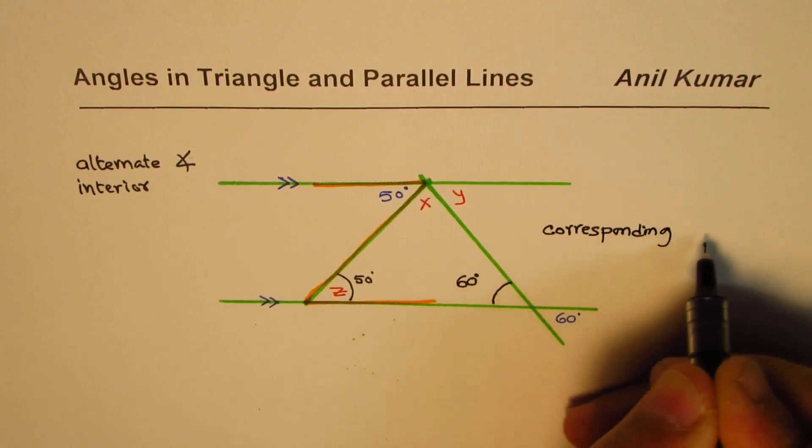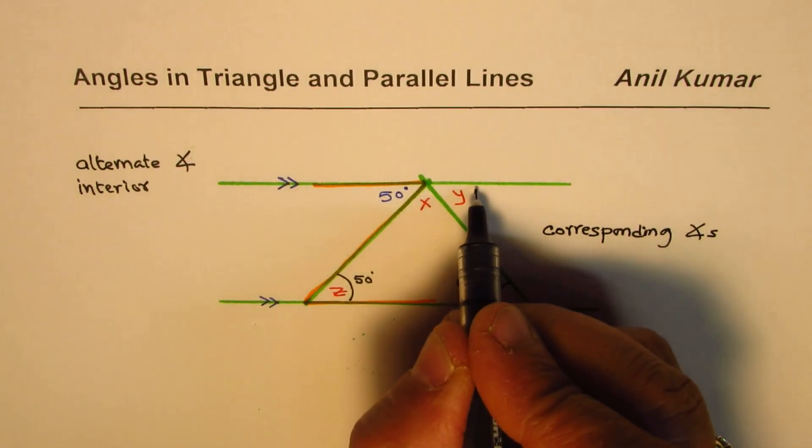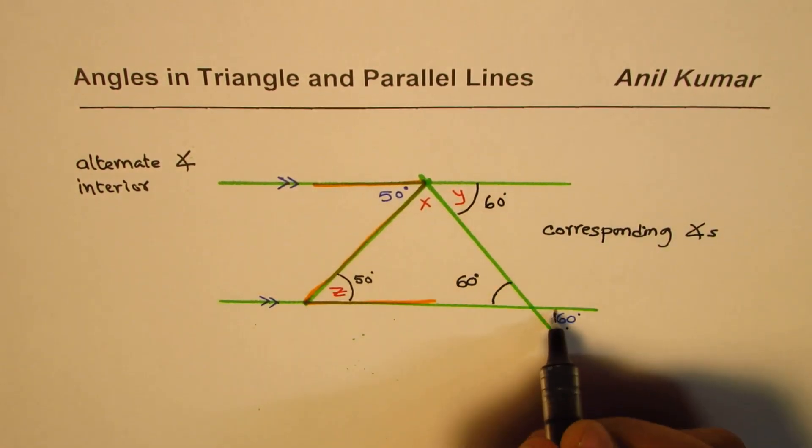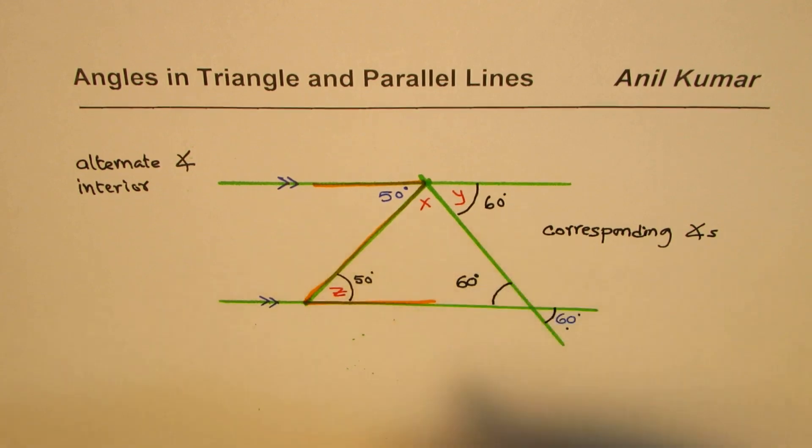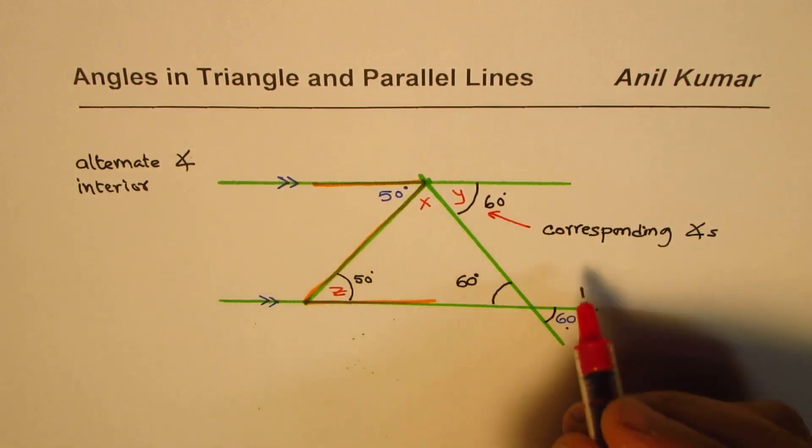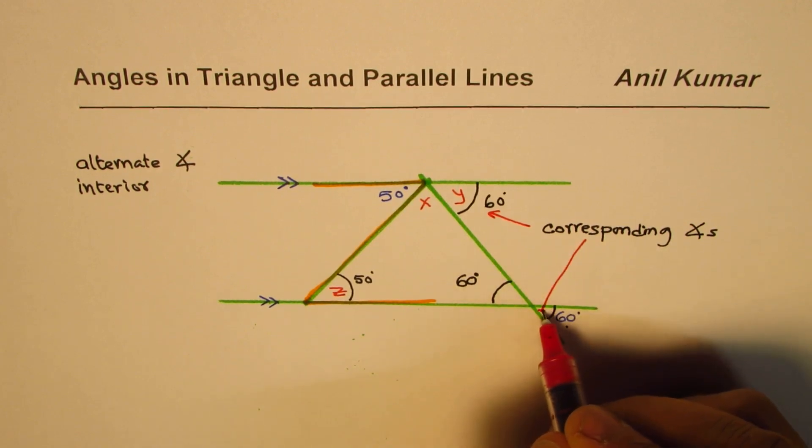And corresponding angles are always equal. So y, this angle should be equal to 60 degrees, right? So because they are corresponding angles.